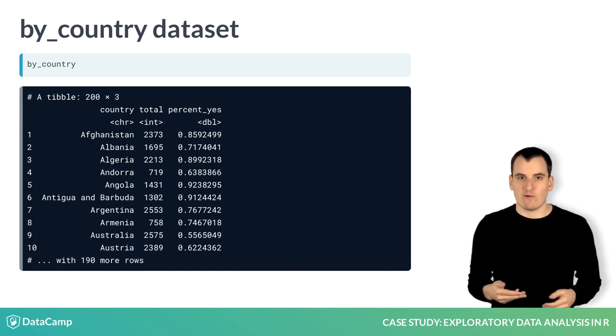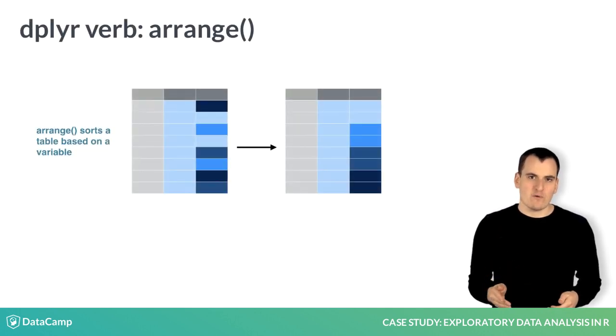Now you might be interested in knowing which country voted yes the most or least often. To discover this, we'll introduce one more dplyr verb: arrange.